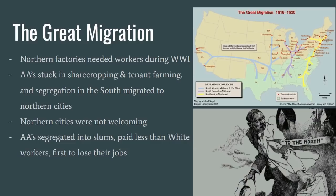During World War I, northern factories needed workers to both fill positions left by young men leaving to fight the war and fill work orders for military necessities from the U.S. government. African Americans in the South were stuck in the cycles of debt associated with sharecropping and tenant farming, along with dealing with segregation and a hostile local white population. Many African Americans migrated to the North because they saw an opportunity in those northern cities. However, the northern cities were not welcoming. The de jure segregation in the South was written into Southern laws, while in the North it still existed in a de facto form — unwritten, but still known. African Americans were segregated into slums, paid less than white workers, and were the first to lose their jobs.